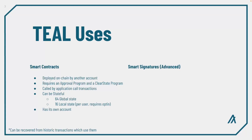Since version 5, all smart contracts have their own associated account, allowing a smart contract to act as a programmable escrow account. Smart contracts can also issue inner transactions to other accounts or other smart contracts, including deploying their own smart contracts.